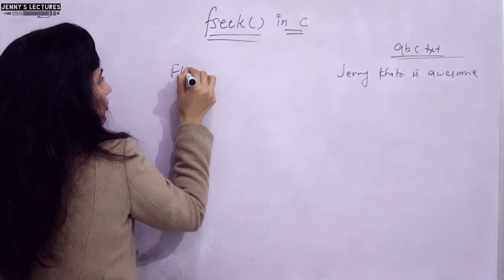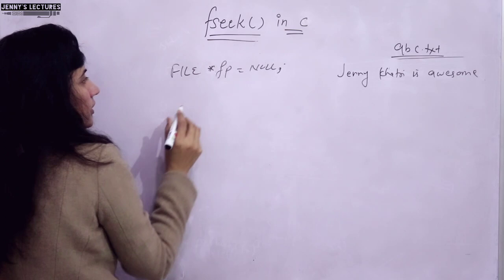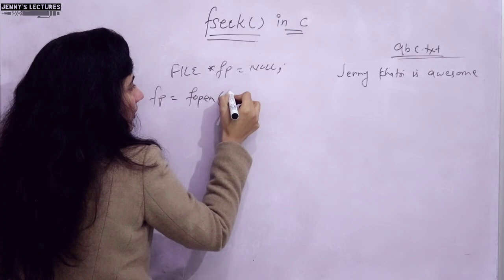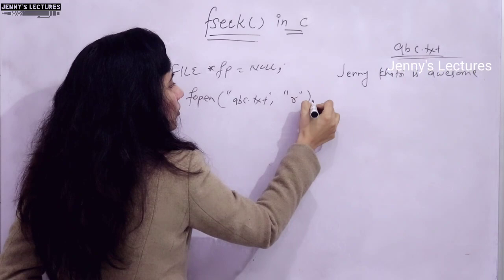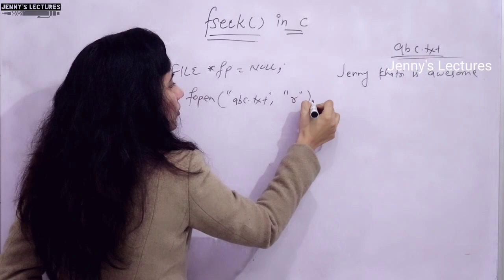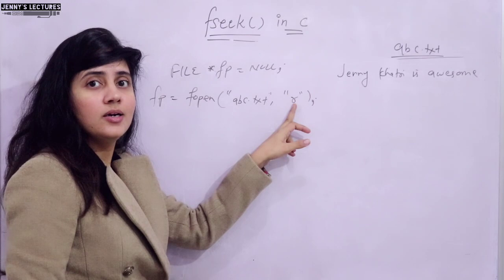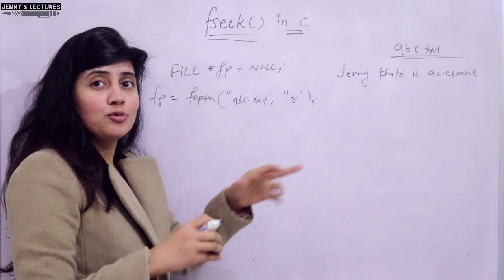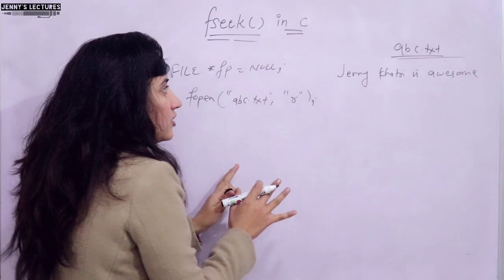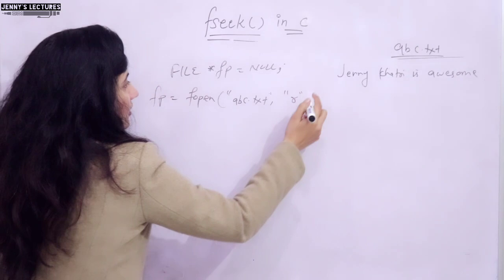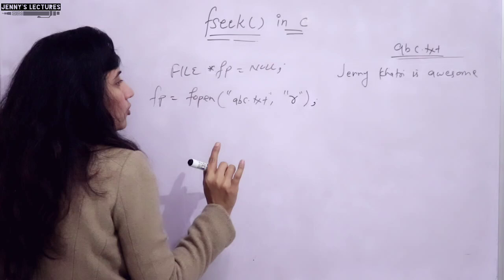In our program, first we declare a file pointer initialized to null and open the file using fopen - the file name is abc.txt and I am opening it in read mode. My main goal is to help you understand what the fseek function does. You can try fseek with any mode - r, w, a, r plus, w plus, a plus - but each mode will give different results. Once you understand fseek, you can try those variations yourself.